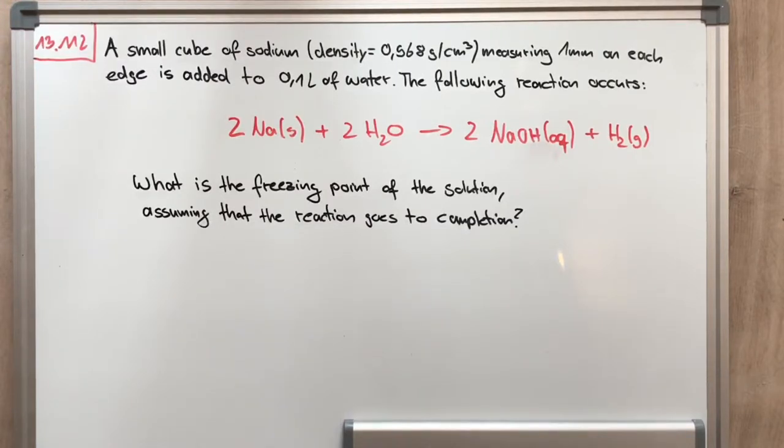The following reaction occurs: 2 Na(s) + 2 H2O → 2 NaOH(aq) + H2(g).